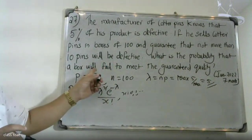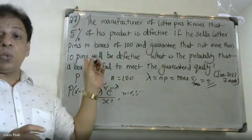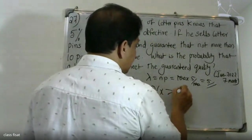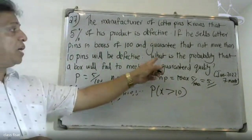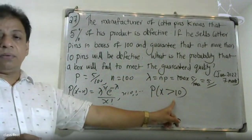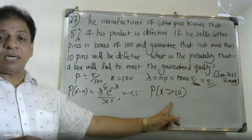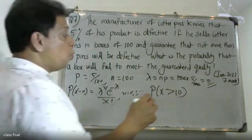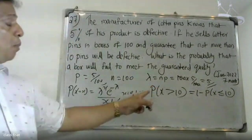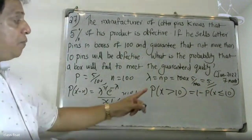What is the probability that the box will fail to meet the guaranteed quality? The guarantee states not more than 10 pins will be defective. Failing to meet guaranteed quality means the probability of X greater than 10.